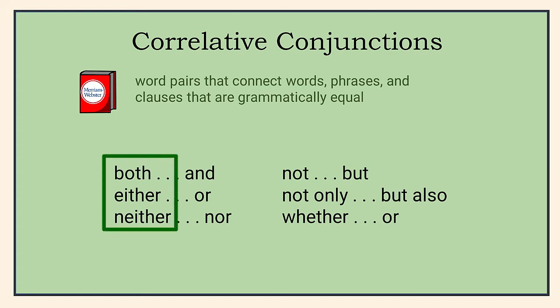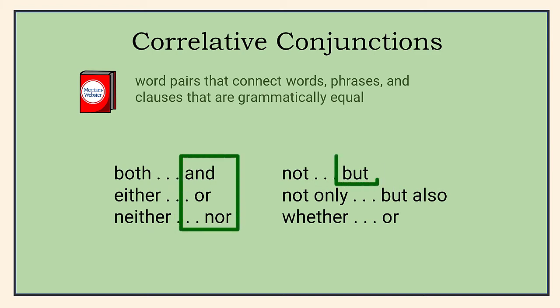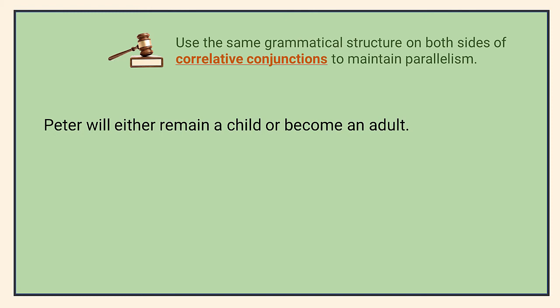Both, either, and either, for instance, can function as pronouns. They can also function as adjectives — 'both are broken' and 'both battle droids are broken.' Similarly, 'and,' 'or,' and 'nor' by themselves are coordinating conjunctions. So the rule relating to parallelism is that we use the same grammatical structure on both sides of correlative conjunctions. Once we locate the two conjunctions, we look carefully at the pattern that follows each of them. These patterns need to be the same.